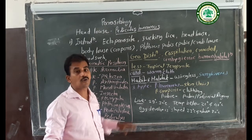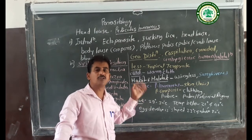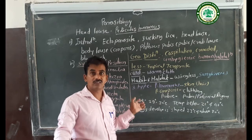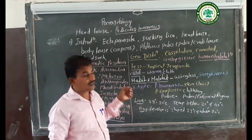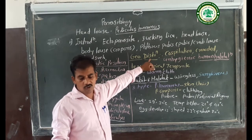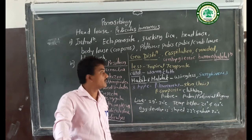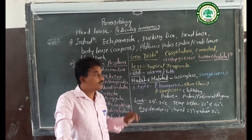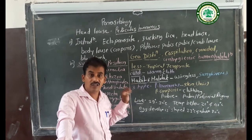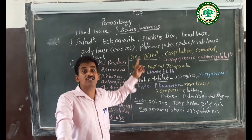Next is the geographical distribution — that is, where these animals are distributed in the world: which locality, which country, which region. This human louse is a cosmopolitan animal, meaning they are distributed worldwide in all races of people.